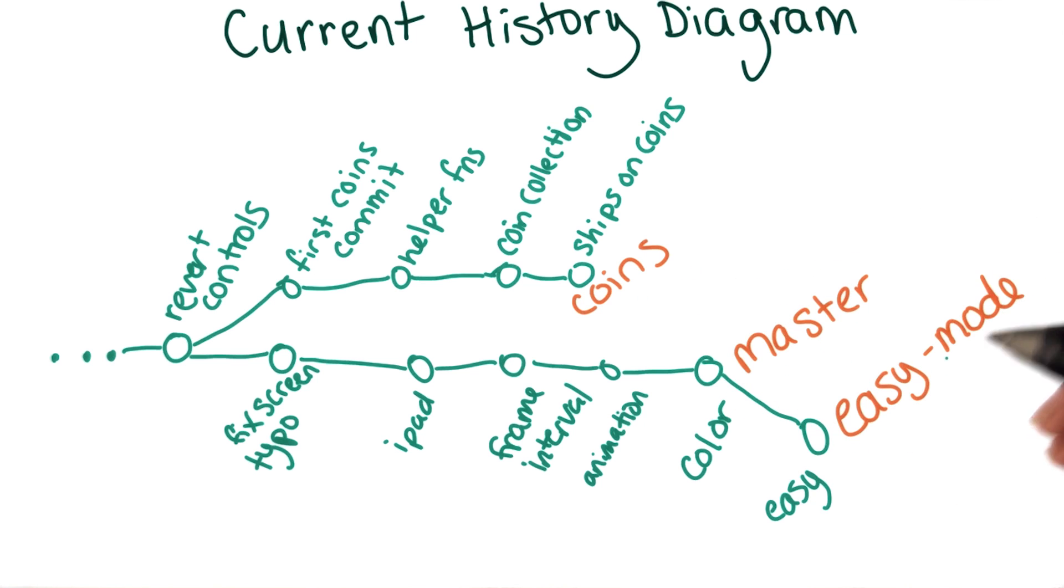To make it really clear what info is actually stored by git, I'll include arrows in our diagram to show each commit's parent. This will become more important once we get to merging, but it's good practice to start thinking of commits as having parents now.